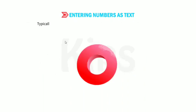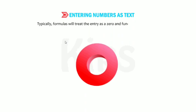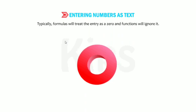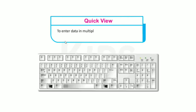Typically, a formula will treat the entry as a zero and a function will ignore it. Quick tip: to enter data in multiple lines in the same cell, use the Alt+Enter key combination.